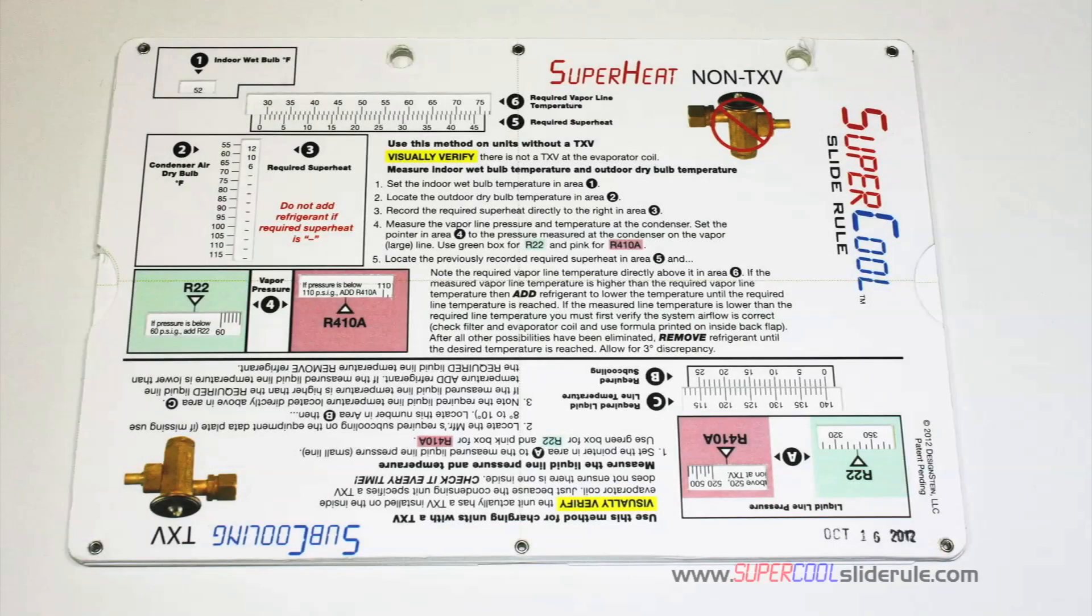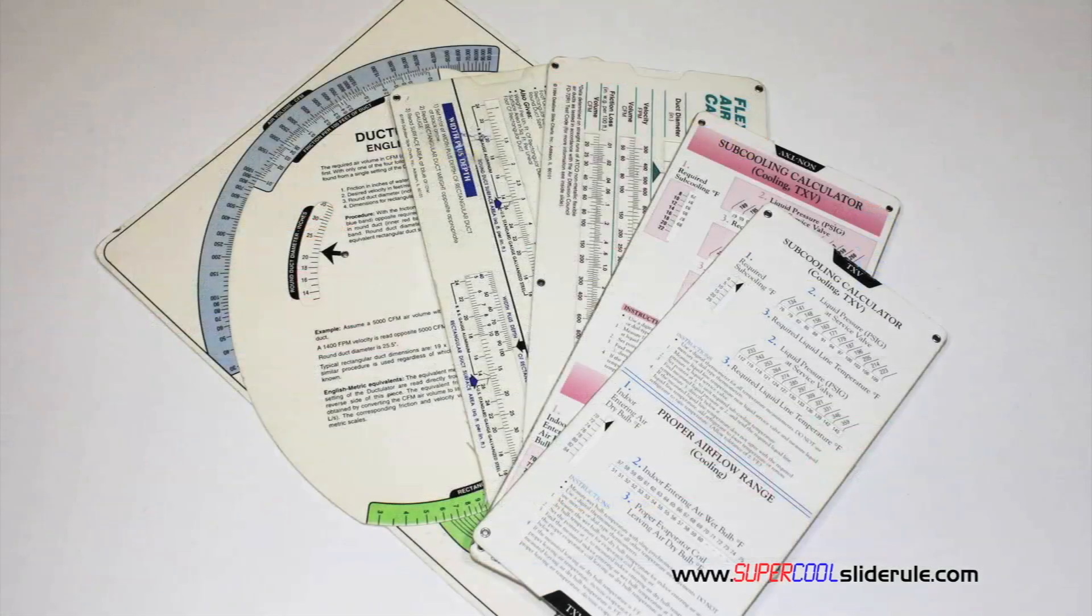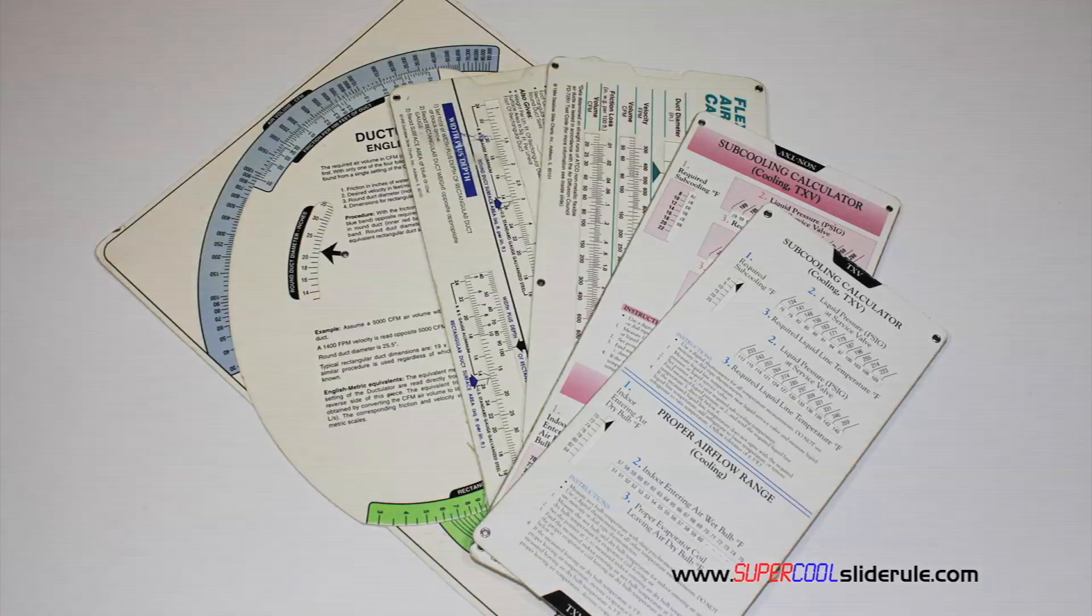Hello. I'd like to take a minute to introduce you to the coolest tool in the HVAC industry. Historically, technicians have carried four or five different slide rules. You have one for R22, one for R410A, one for metal duct sizing, one for flexible duct sizing, and yet others for diagnostics or troubleshooting.